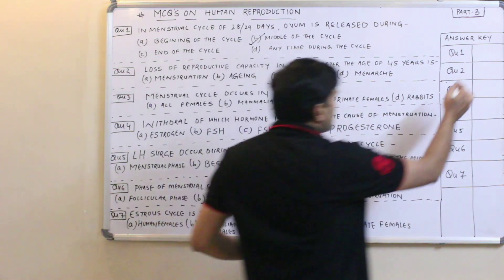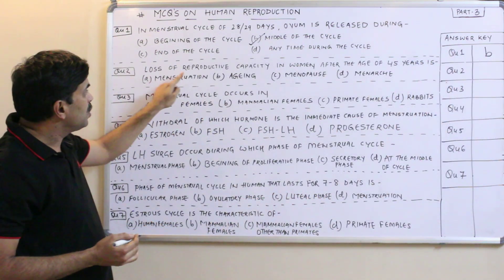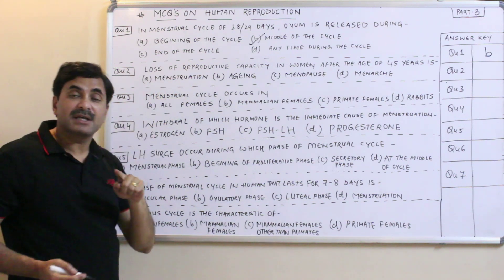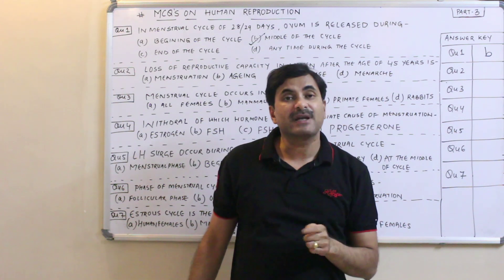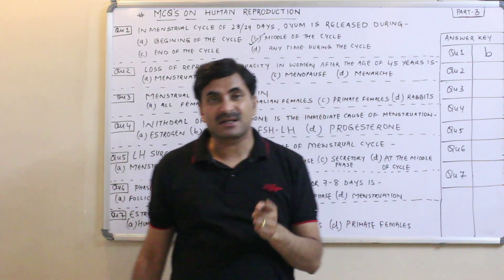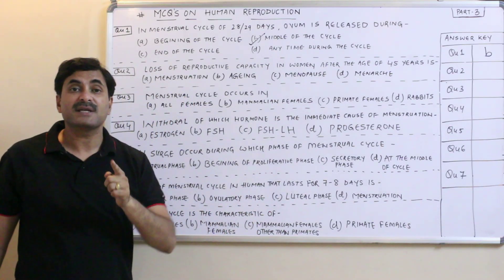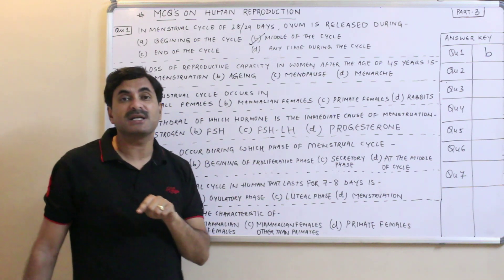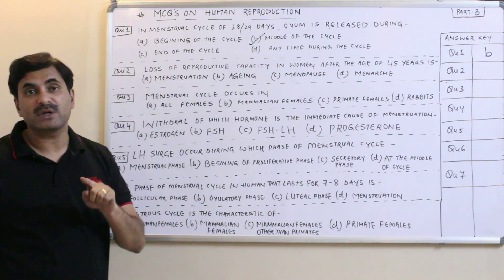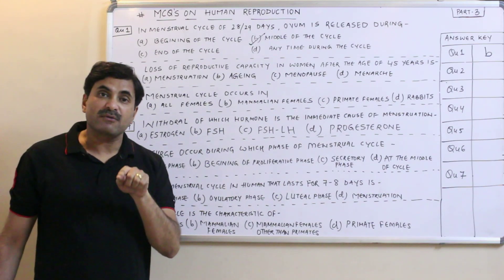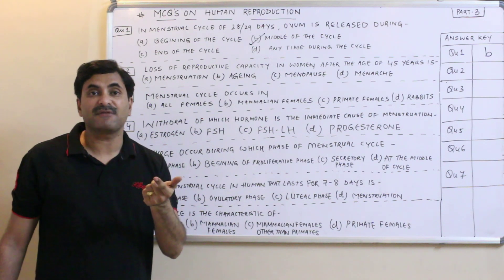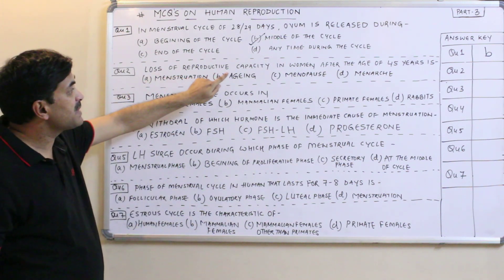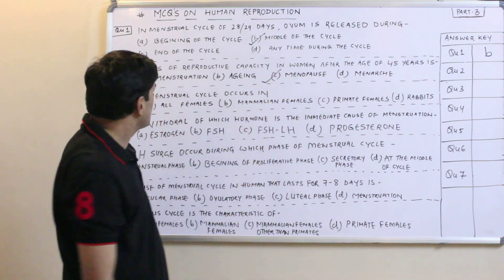Question number one has answer B. Question number two: loss of reproductive capacity in women after the age of 45 is called what? A female gains reproductive capacity at puberty when the menstrual cycle starts, known as menarche. The reproductive capacity is lost at age 45 to 50 when she can no longer release the ovum. This stoppage of the menstrual cycle is called menopause. Question number two answer is C.